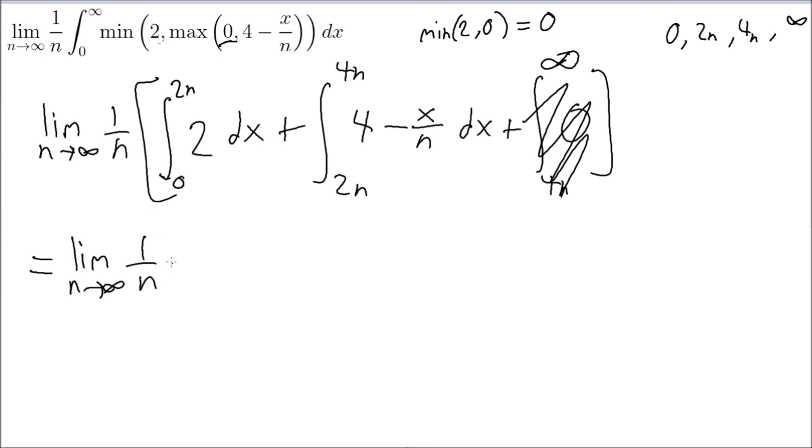So I'm not going to bring in dominating convergence theorem, because that's just, I'm not very confident in explaining that, so I'm not going to bring that up. So here, the integral of this, this is an easy integral, I mean, this is just 2 times 2n minus 0, this is 4n. Right. And then, here, integrate this, we get what?